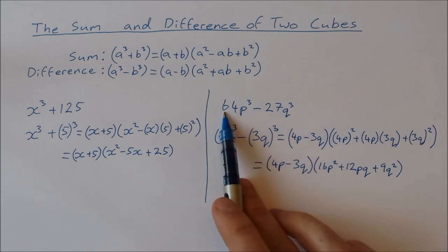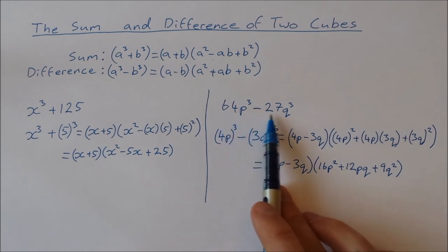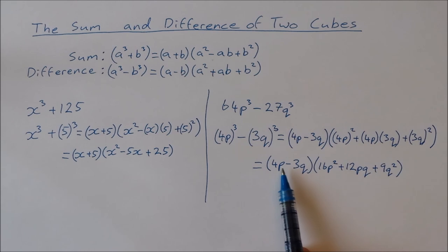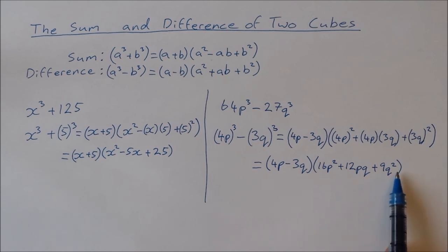And then 3q squared is going to be 9q squared. So there we have factorized 64p cubed minus 27q cubed, which gives us 4p minus 3q times 16p squared plus 12pq plus 9q squared.